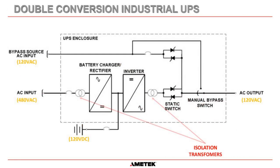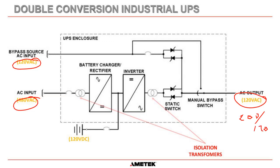This drawing is of an industrial UPS — specifically an Amatek SCI UPS. You can see some differences already. Our AC input is 480 volts, similar to the commercial UPS, but in most cases for an industrial UPS the bypass source will be 120 volts single phase and the AC output will be 120 volts single phase. It can be 208 three-phase or split-phase 240/120 depending on your needs, but the majority of UPSs we sell are 120-volt single-phase outputs.